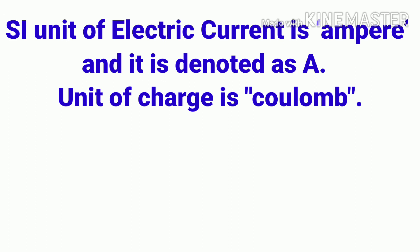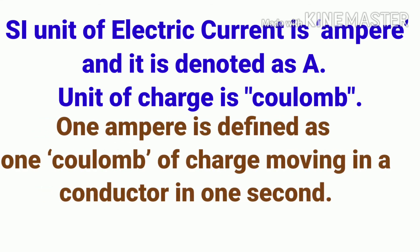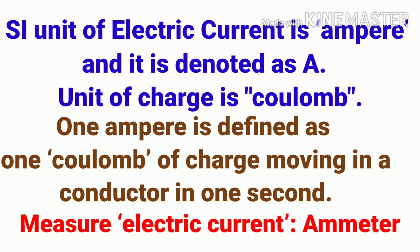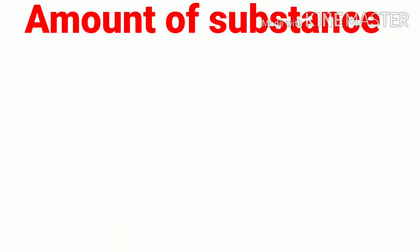The unit of electric current is ampere, symbolized by the letter A. The unit of charge is coulomb. One ampere is defined as one coulomb of charge moving through a conductor in one second. The measuring instrument for electric current is the ammeter.